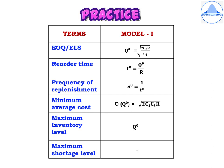First we have EOQ, that is economic order quantity or the economic lot size, which is denoted by Q⁰ = √(2C₃R / C₁). Then we have the reorder time T⁰ = Q⁰ / R. The frequency of replenishment N⁰ = 1 / T⁰. The minimum average cost C(Q⁰) = √(2C₁C₃R). The maximum inventory level is Q⁰, and maximum shortage level in Model 1 does not exist.